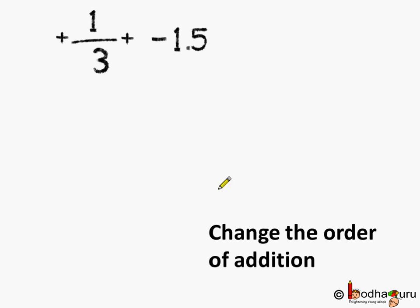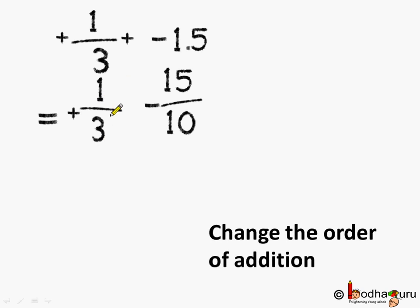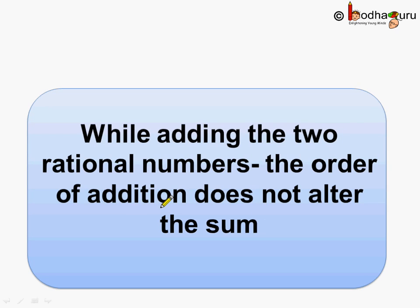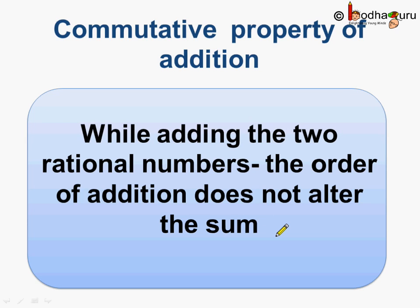Now let's change the order of addition. So we add first 1 by 3 then minus 1.5. This becomes 1 by 3 minus 15 by 10. Taking LCM as 30, we get 10 minus 45 divided by 30, giving minus 35 by 30. So while adding two rational numbers, the order of addition does not alter the sum. This is the commutative property of addition, and we say it holds true for rational numbers.